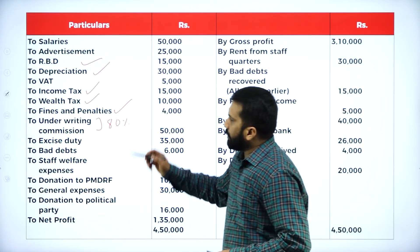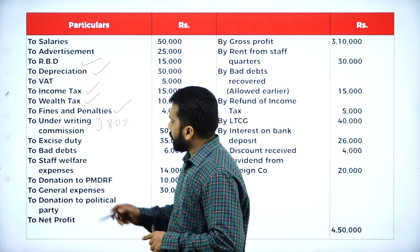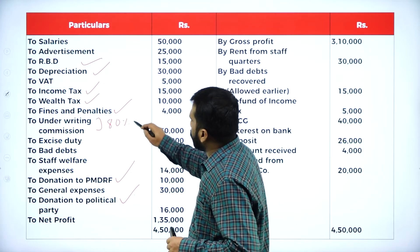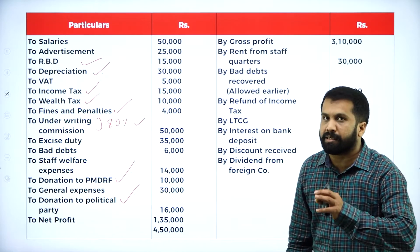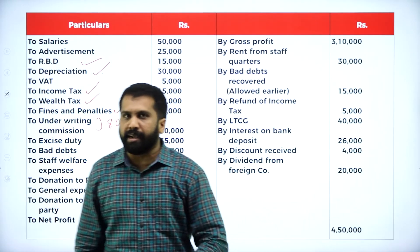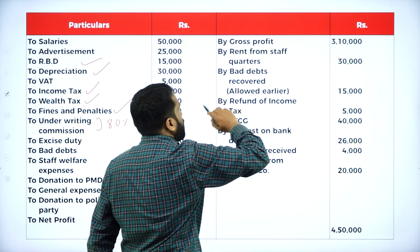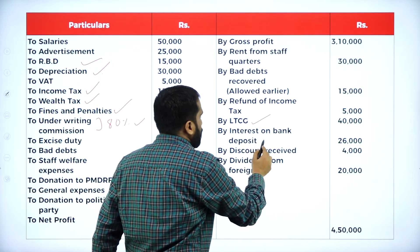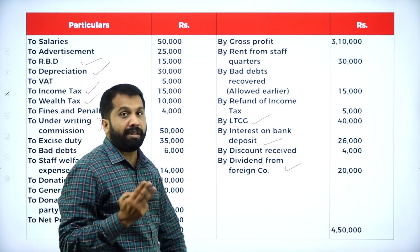80% excise duty is part of the business. Bad debts - part of business. Staff welfare expenses - part. Donation - take it. General expenditure - part. Donation to political party - yes, that comes. In total there are 8 items that come under disallowed: RBD, depreciation, income tax, wealth tax, fines and penalties, underwriting commission (only 80%), donation to Prime Minister's Drought Relief Fund, and donation to political party. Now for the allowed/other head items: LTCG, interest on bank deposit, and dividend - these are 3 items.